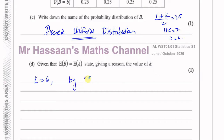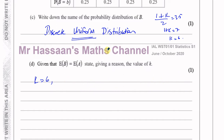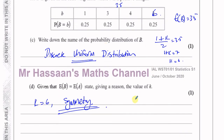You can explain this by symmetry: K must equal 6. Alternatively, the first plus the last divided by 2 gives the expected value — so 1 plus K over 2 equals 3.5, giving 1 plus K equals 7, so K equals 6. That's part D done.